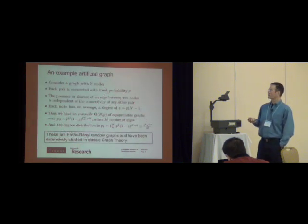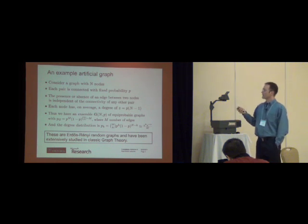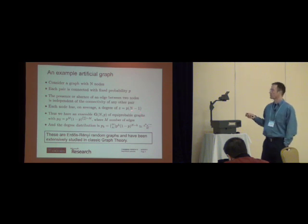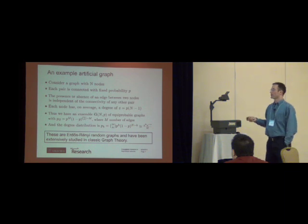An example graph with N nodes connected to each other, each with the same probability, small p, independent of whether or not you're connected to nodes already. Then, it's easy to calculate each node has a degree of p times N-1. And if you think of an ensemble of equiprobable graphs, given m, the number of edges, you've got this probability of ensemble graphs. And the degree distribution is binomial.